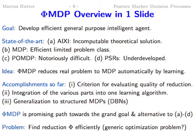What I have accomplished so far: first, you need a criterion for evaluating the reduction — what is a good and what is a bad reduction. Then I'll tell you how to integrate all these parts together to get a real system. All parts are there so you can implement it already — and I actually implemented it. Not all parts are good enough for practical applications, but there's no missing loop. I also generalize it to a more realistic DBN model.